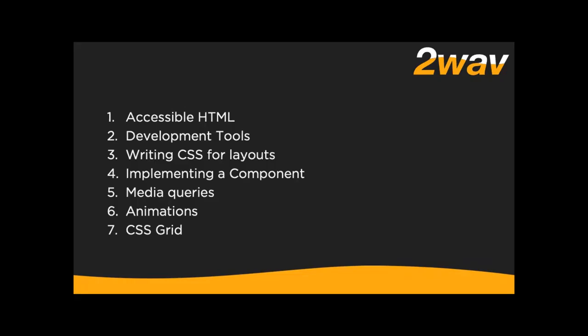That was a heck of a 37 minutes and 39 seconds — we covered accessible HTML, development tools, writing CSS, implementing stuff, media queries, animations, and CSS Grid. I've got to say again, I'm not claiming I'm right. This works for me. I've done it a lot and changed my process on every front-end until the last two. I've now done two in the same way and I'm pretty happy with it, but keep trying stuff.